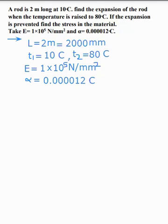First of all, calculate T. Temperature change T is equal to T2 minus T1. So T2 is 80 degrees Celsius and T1 is 10 degrees Celsius, giving T equal to 70 degrees Celsius.